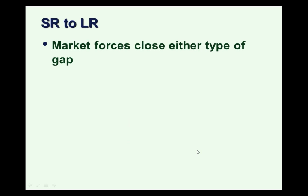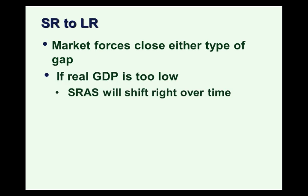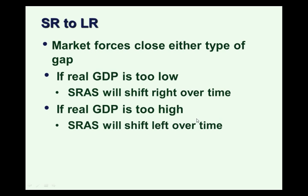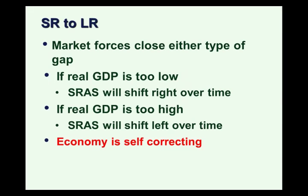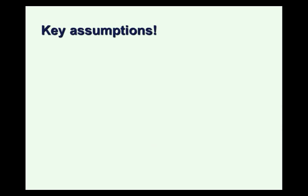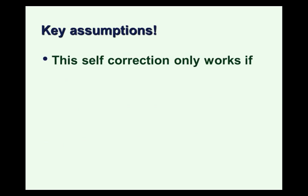So going from short run to long run, in this model there are market forces that can close either type of gap. If real GDP is too low, forces shift the short run aggregate supply curve to the right. If real GDP is too high, forces shift that curve to the left over time. The economy is self-correcting, so it might seem we shouldn't need to do anything about business cycles — but this looks a little simple. We didn't talk about how long it takes for those shifts to occur, and if it takes a long time, people in the economy are suffering.